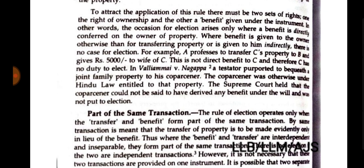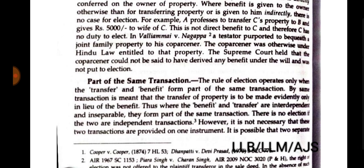For example: A professes to transfer C's property to B and gives Rs. 5,000 to the wife of C. This is not a direct benefit to C, and therefore C has no need to elect. In the case of Vali Amai v. Nagappa, a testator purported to bequeath joint family property to his coparcener. The coparcener was already entitled to that property under Hindu law. The Supreme Court held that the coparcener could not be said to have derived any benefit under the will and was therefore not put to election.